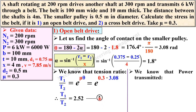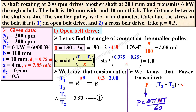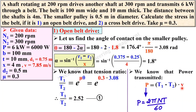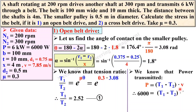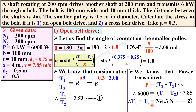The power transmitted is P = (t1 − t2) × v. We have two formulas for power — (t1−t2)×v and P = 2πNT/60 — but here we do not know the torque, so we use the first. Putting P = 6000 W and v = 7.85 m/s, we get t1 − t2 = 764.3 Newton. This is the effective or net tension — equation number 2.